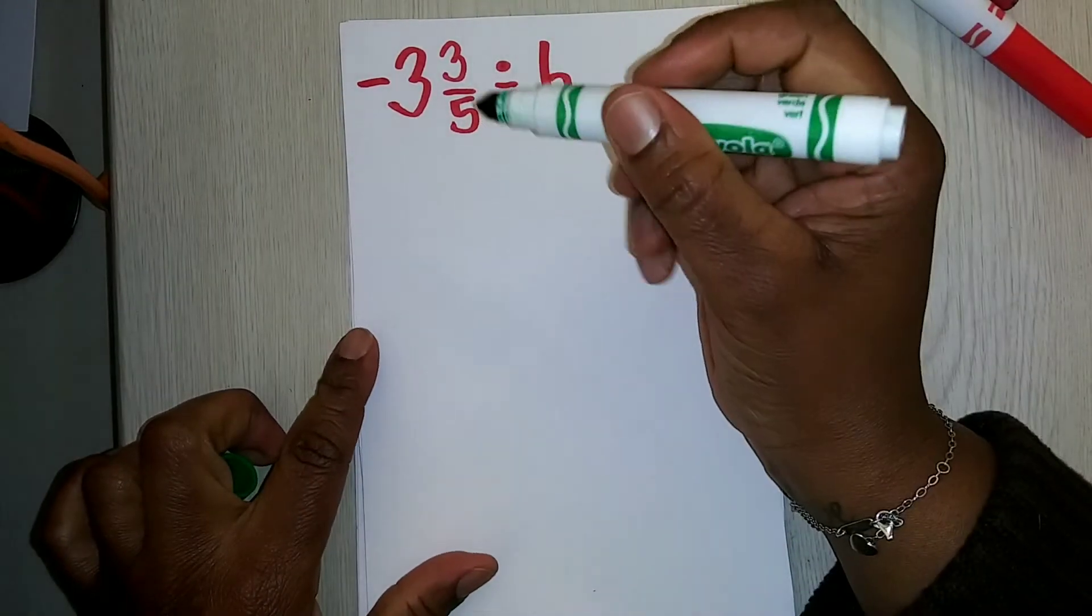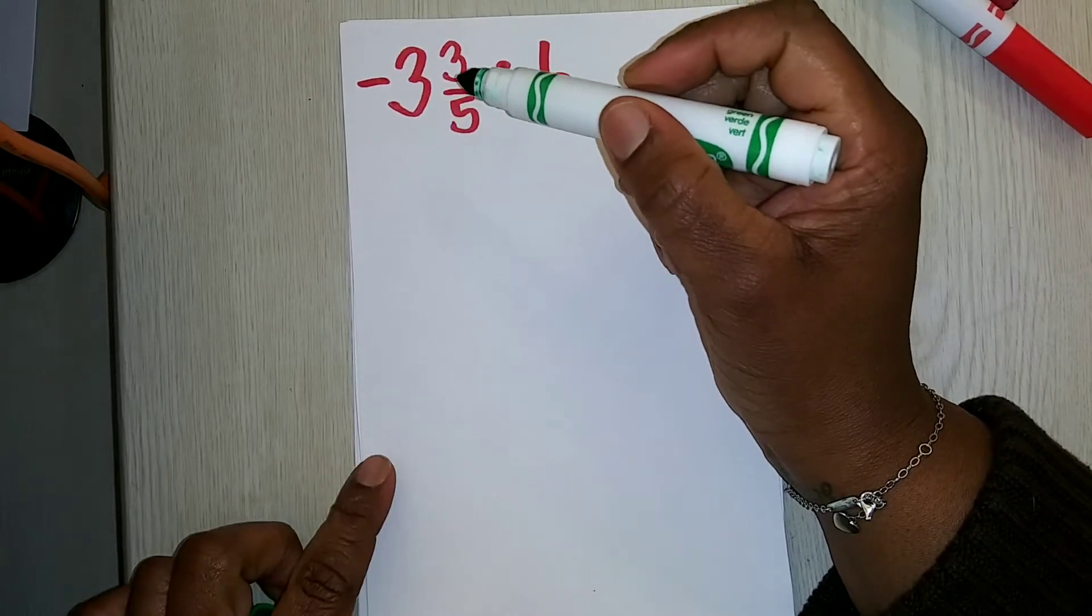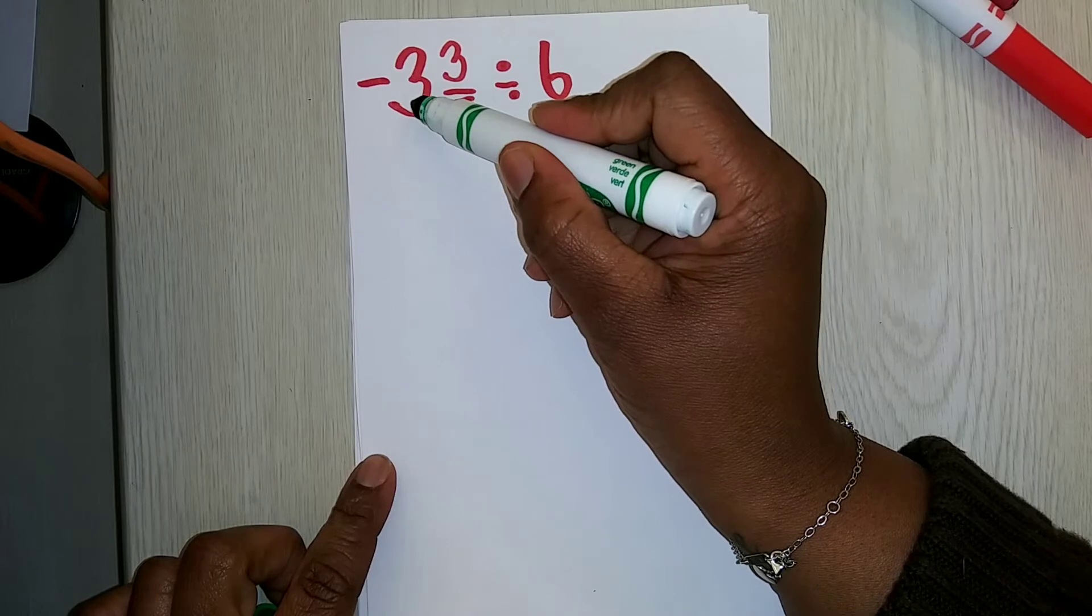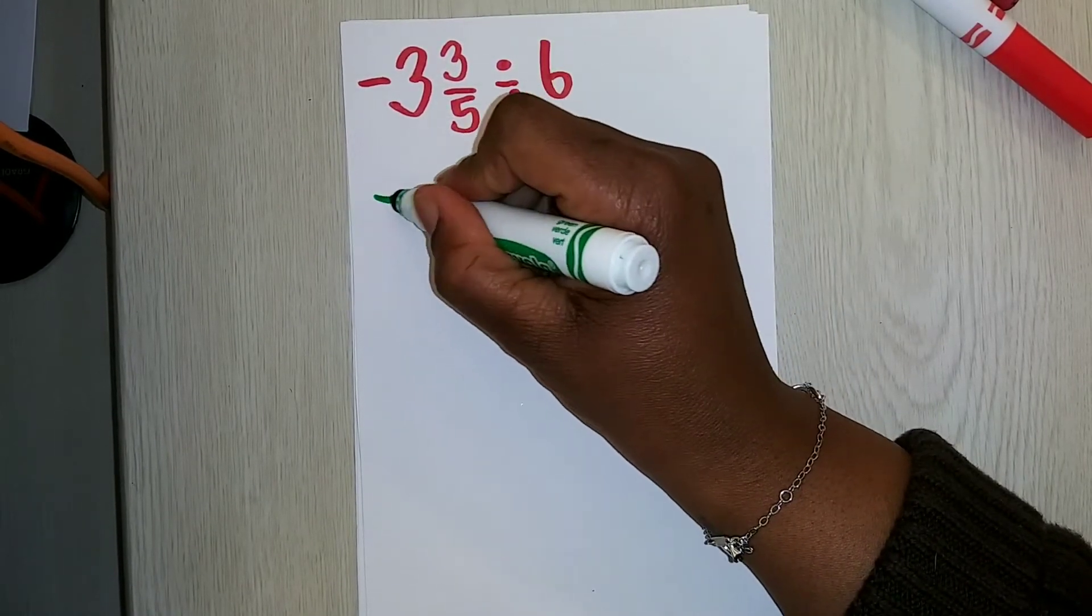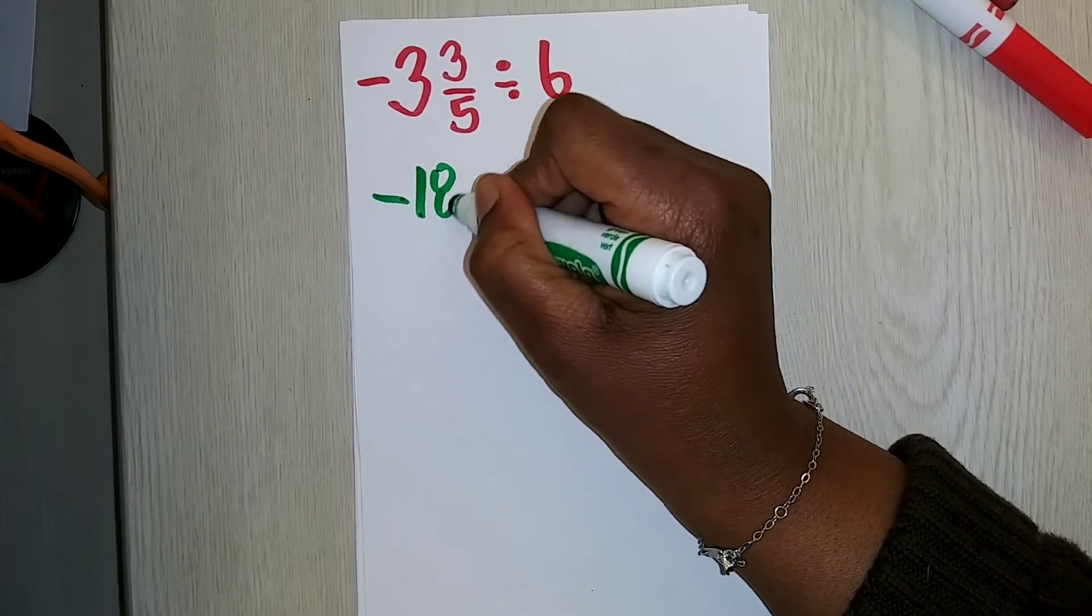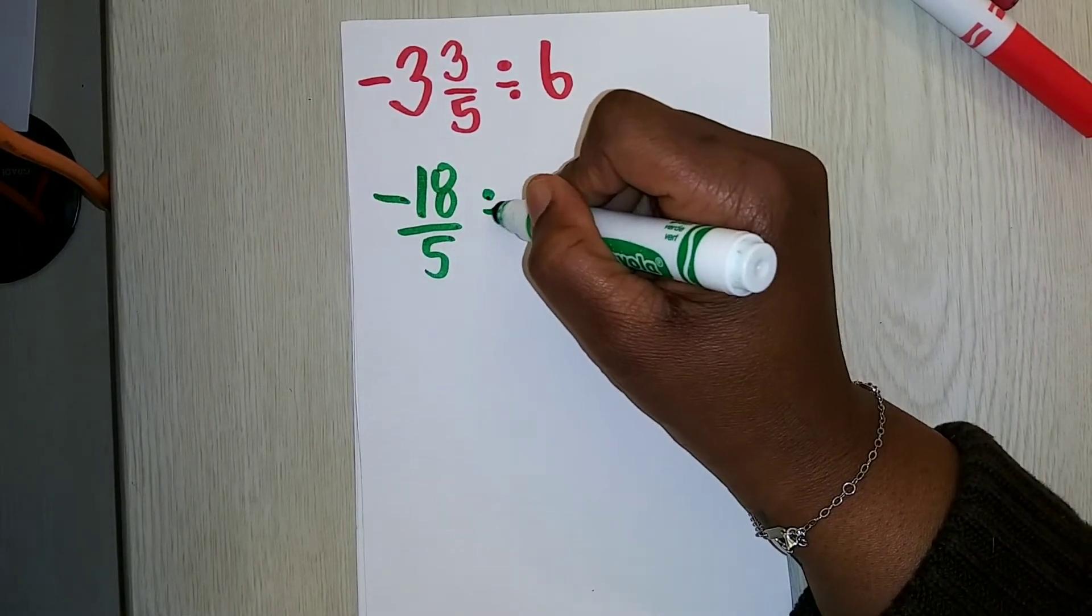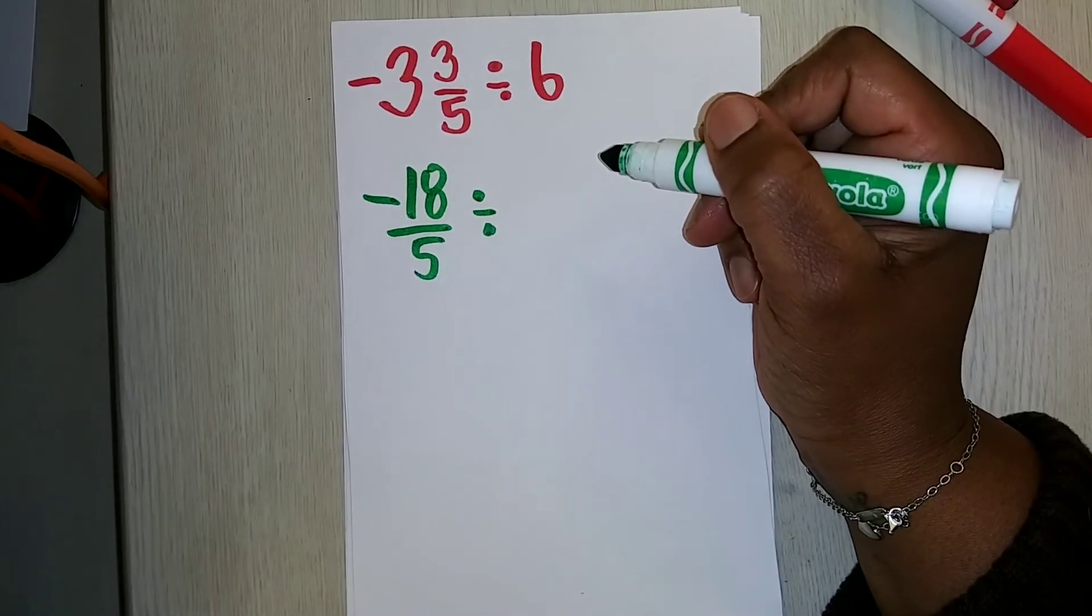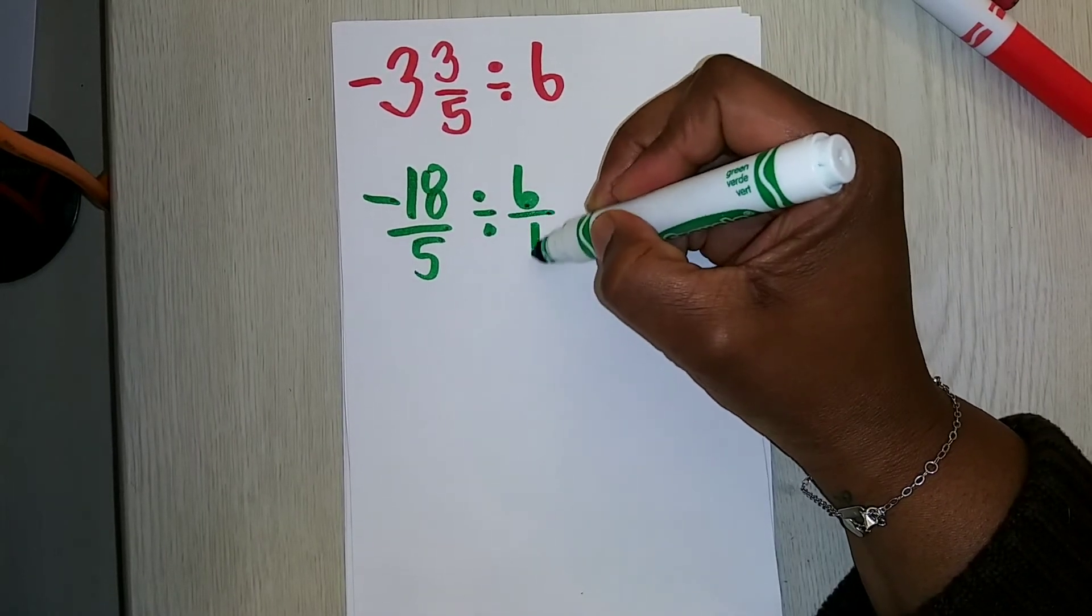The first thing I want to do is change this mixed number to a fraction greater than 1. 5 times 3 is 15 plus 3 is 18. So that's going to be negative 18 fifths divided by—I'm going to take the 6 as a whole number and make it a fraction. 6 as a fraction, I'm going to make the denominator 1.